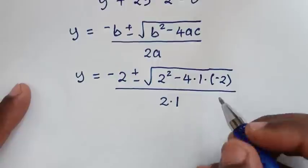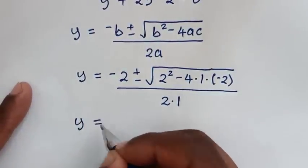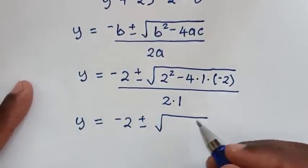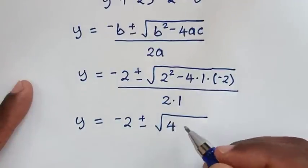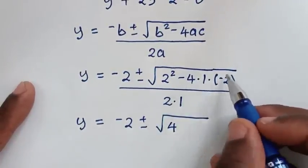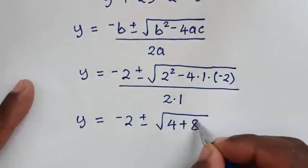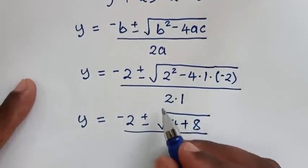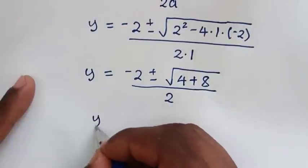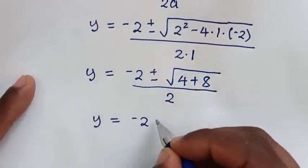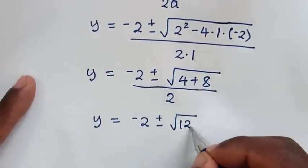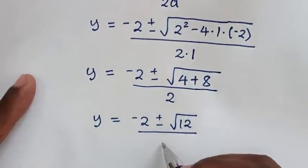In the next step: y equals negative 2 plus or minus square root of — 2 squared is 4, then negative 4 times a, a is 1, so negative 4, then negative 4 times negative 2 is positive 8 — over 2. So it will be y equals negative 2 plus or minus square root of 4 plus 8, which is 12, over 2.